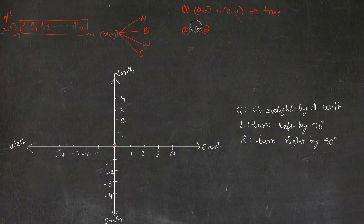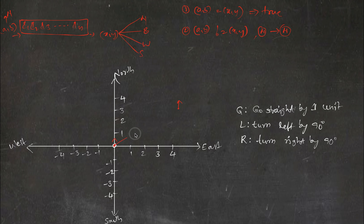The second condition: if A comma B is not equal to X comma Y, but we started facing north and ended up still facing north, then each time we execute the instruction set we'll move further and further away from our initial position in the same direction. There is no possibility of a cycle, so just return false.